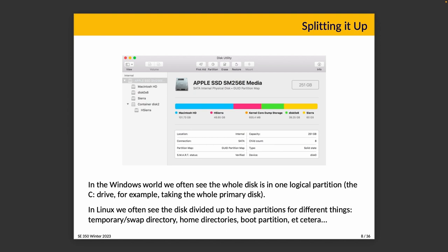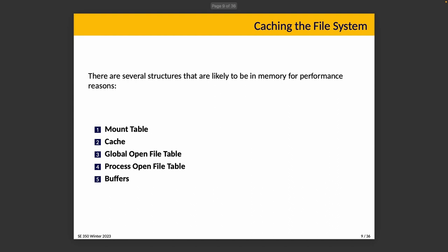In Linux we often see the disk divided into partitions for different things — temporary and swap partitions will be different sizes than home directories, and the boot partition is small. These are just logical choices about how to manage the data of the system; there's no reason you have to follow a specific scheme.